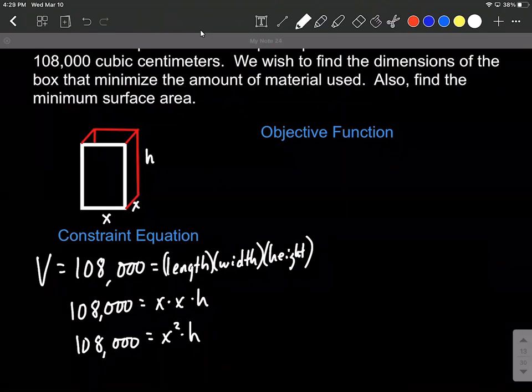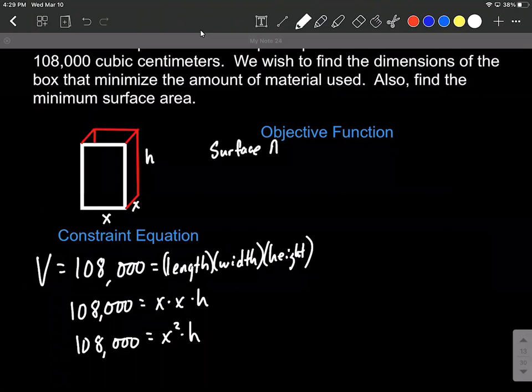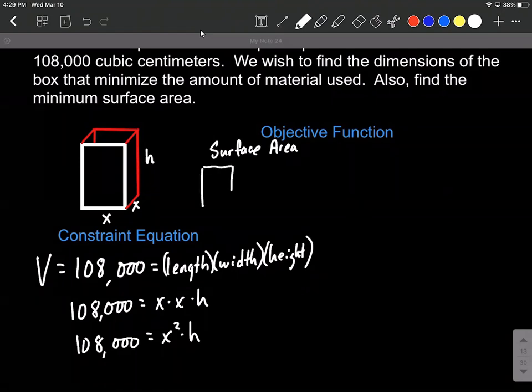Next we want to create an objective function. So on this one we want to find the dimensions that minimize the amount of material used. So as we're trying to minimize the amount of material, what that means is that's another way to say the surface area. Basically the area of each one of the sides and the bottom of our box. So if we want to draw this out, it's kind of like if you cut this box all apart and it fell down, it would basically be sides and then a square base.